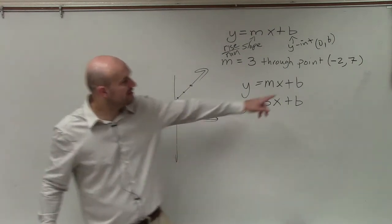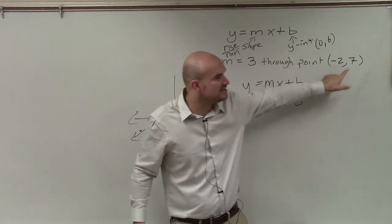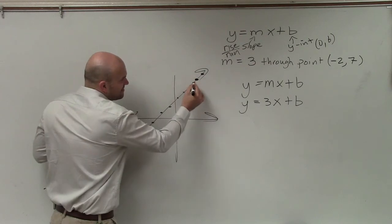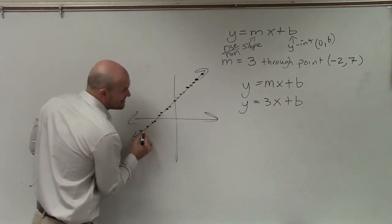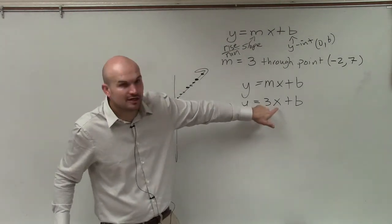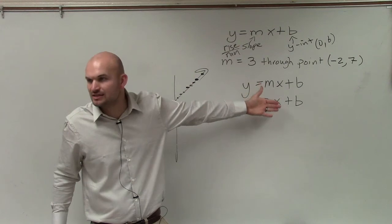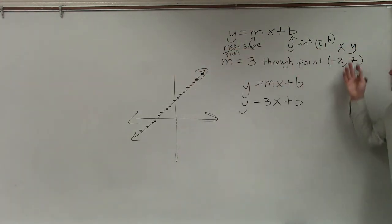This is a point that lies on the line. The graph goes through this point. Remember, a line is made up of infinite many x and y points. That's why the equation has the x and the y. The x and the y represent any point that the graph goes through. So I can go ahead and plug this in for x and this point in for y.